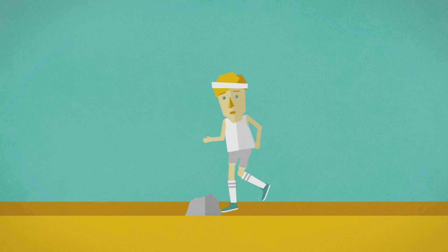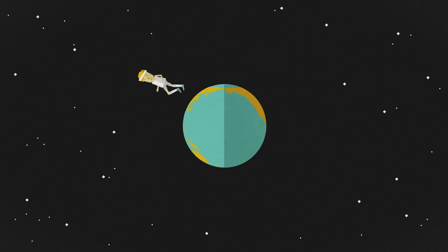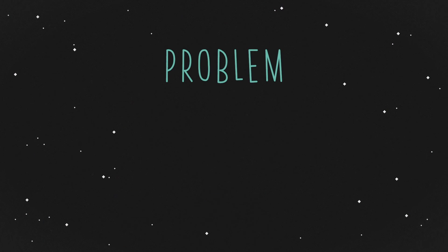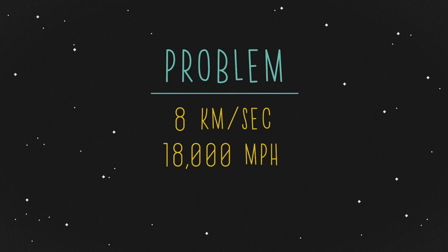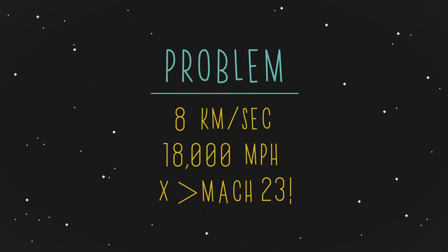So technically, if you ran fast enough and tripped, you could miss the Earth. But there's a big problem. First, you have to be going 8 kilometers a second. That's 18,000 miles an hour, just over Mach 23.